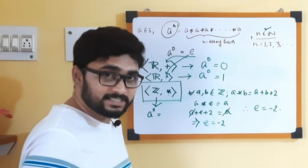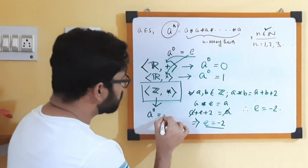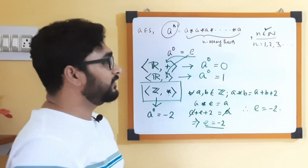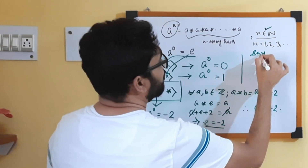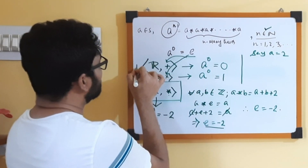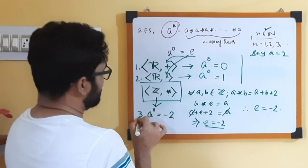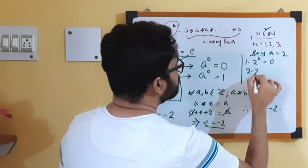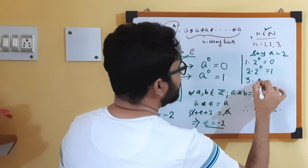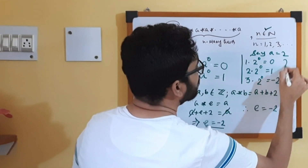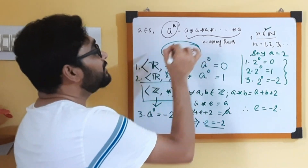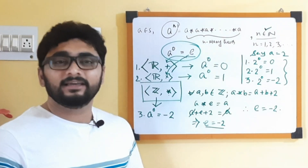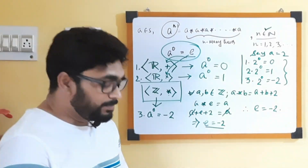For the structure ℤ★ defined as A★B = A + B + 2, the identity element is −2. So A to the power 0 for that structure is −2. That means for these three operations, if my A is 2: for case 1 (addition), 2 to the power 0 equals 0; for case 2 (multiplication), 2 to the power 0 equals 1; for case 3 (our custom operation), 2 to the power 0 equals −2. So what is A to the power 0 actually depends on what your binary operation is. We cannot prove anything about A to the power 0 — it is a definition.